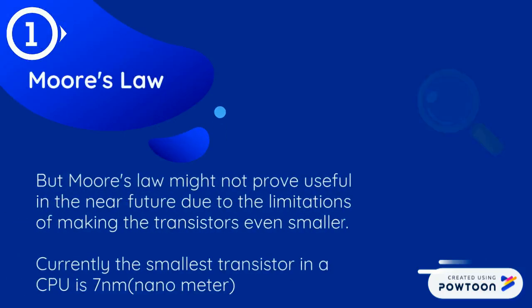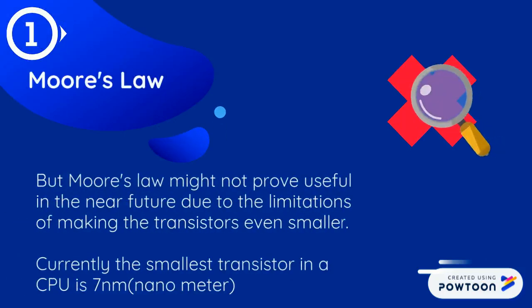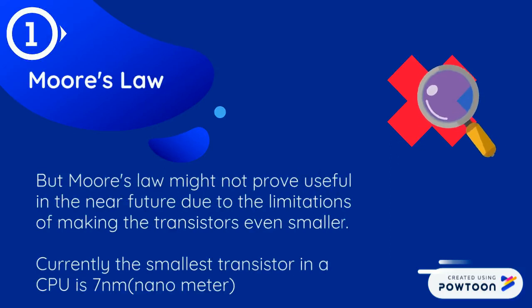But Moore's Law might not prove useful in the near future, due to the limitations of making transistors even smaller. Currently, the smallest transistor in a CPU is 7nm.